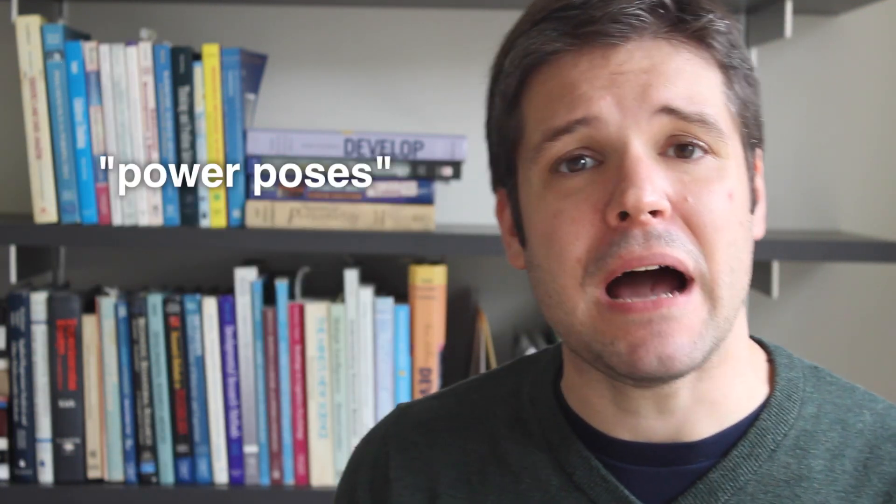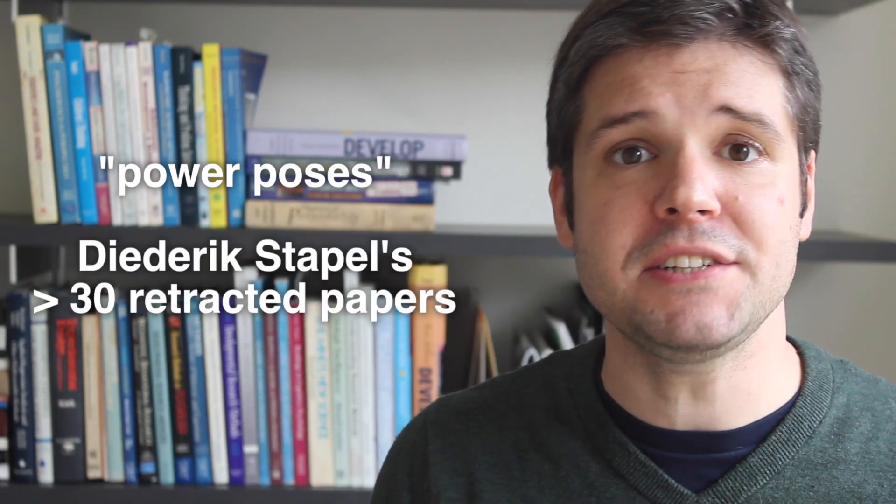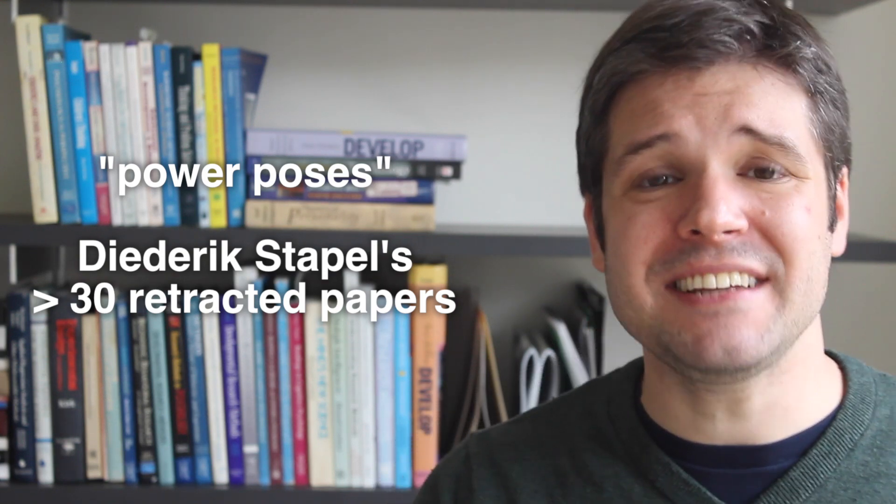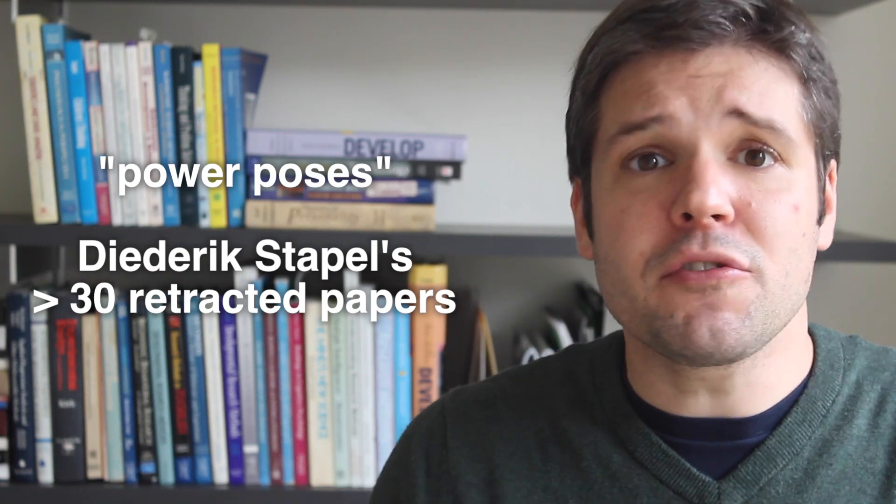In the case of this study on power poses, along with all of Stapel's retracted research, these were studies that passed peer review. Independent scientists, usually anonymous, looked through the research and said it was okay to publish. So how'd they get through? And can we prevent them from getting through?